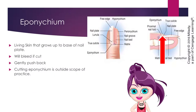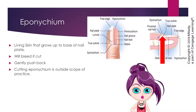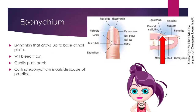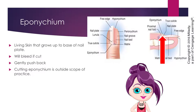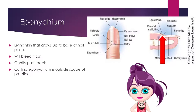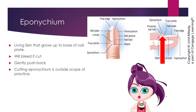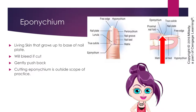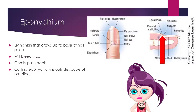The eponychium is the living skin that grows up to the base of the nail plate. The eponychium will bleed if it is cut, and should be gently pushed back during a manicure. Cutting any eponychium is outside of the scope of practice.